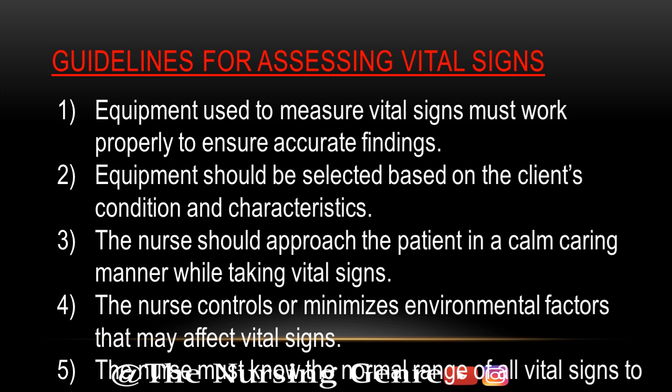Guidelines for assessing vital signs. First guideline: equipment used to measure vital signs must work properly to ensure accurate findings. We use temperature, electronic, and mercury thermometers, and we check the blood pressure apparatus. If the equipment does not work properly, we check it. That's the first guideline. Second guideline: equipment should be selected based on the client's condition and characteristics.